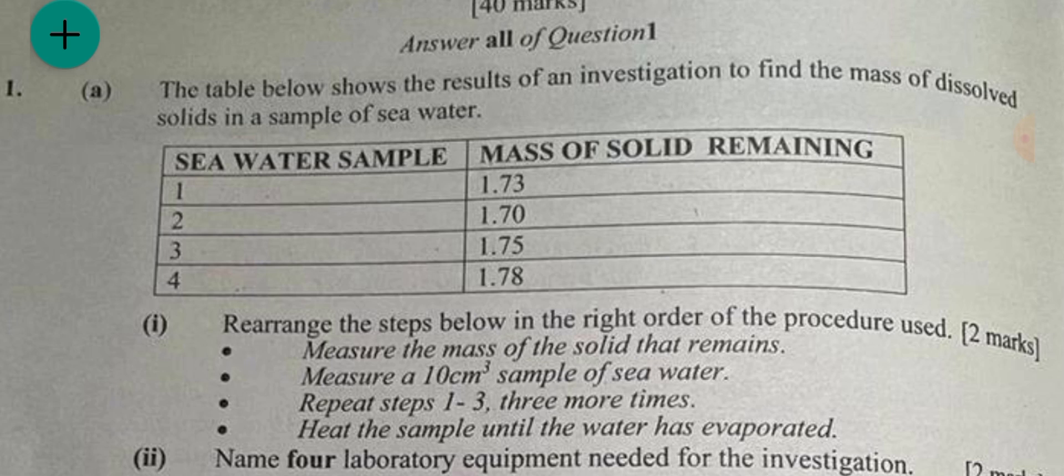And you can see the table. The first one is asking us to rearrange the steps below in the right order of the procedure used. So the first thing to do is to measure a 10 centimeter cube of seawater, so that's one. And the second is to heat the sample, so that's two. Then the third is to measure the mass of solids that remained, that's three. And last one is to repeat, that's one to three more than three times.